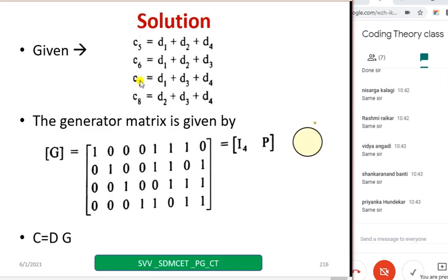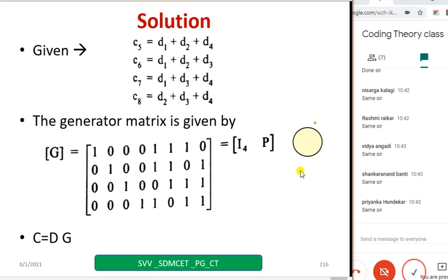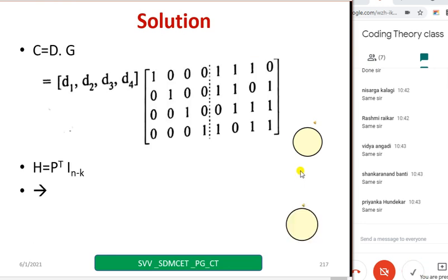From the given parity check bit equations, I will write the parity matrix P. Then G equal to IP I will write. Then C equal to D into G. Take at least 2 or 3 data combinations and find out C — no need to do all 16. Then write down H equal to P transpose followed by I of size (n minus k). I am going a little fast because you have already solved many problems.